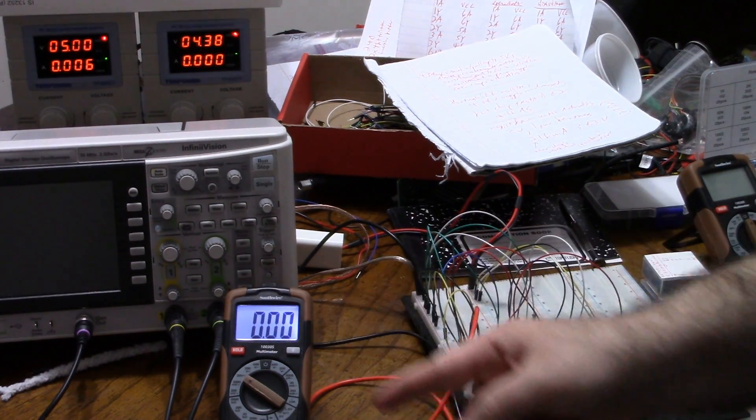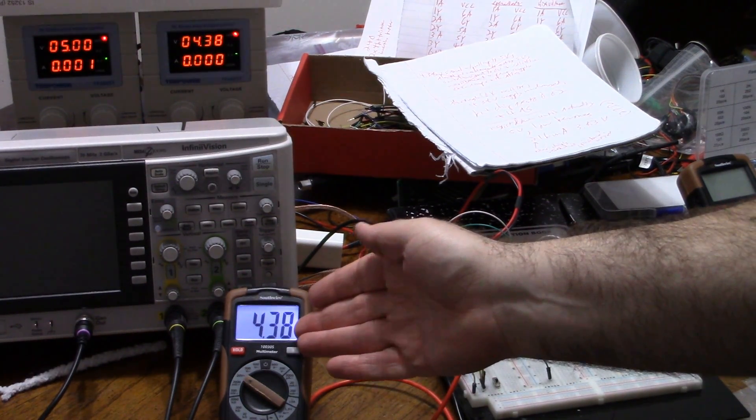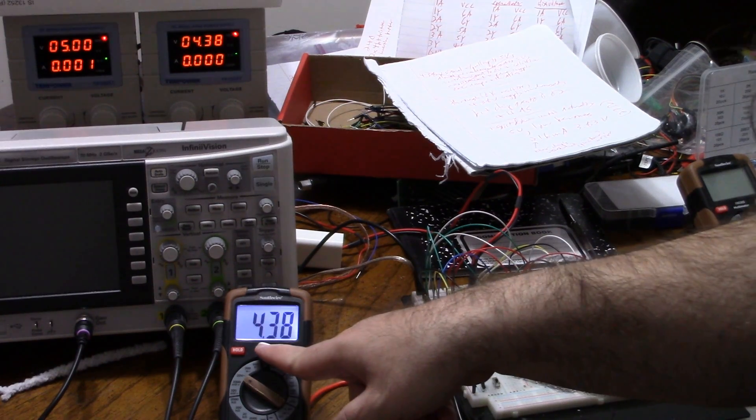Low is, of course, 0 volts, and high is 4.38. Now, generally that's plenty, but sometimes it's not. What can we do about this?